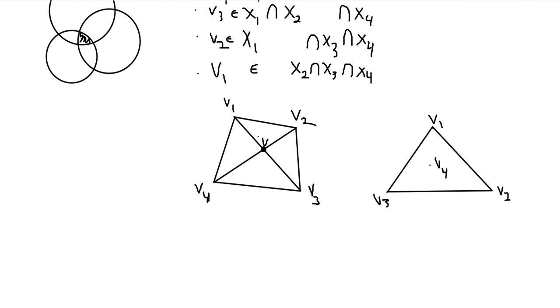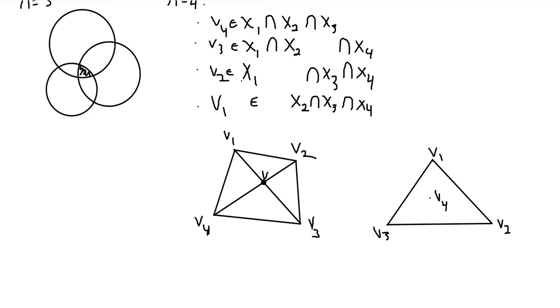Since this segment V1, V3, any point on this segment must be in the intersection of X2 and X4. Similarly, V2 and V4 share the intersection of X1 and X3.